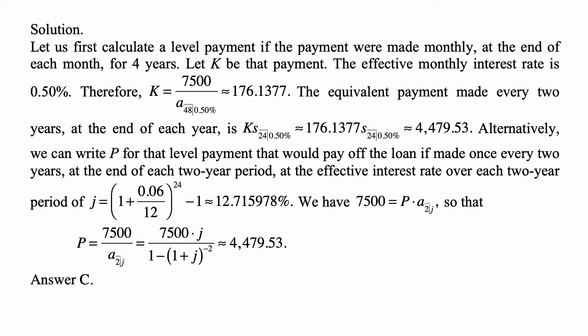The equivalent payment made every two years at the end of each year is the accumulated value of payments made over two years. That's K times S angle 24 at 0.5%, which is 176.1377 times S angle 24 at 0.50%, approximately 4,479.53.